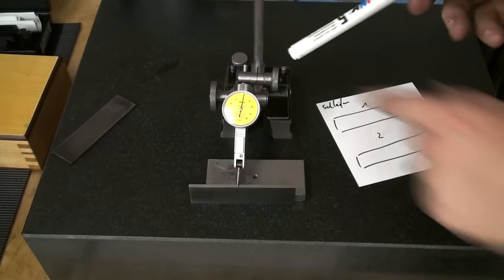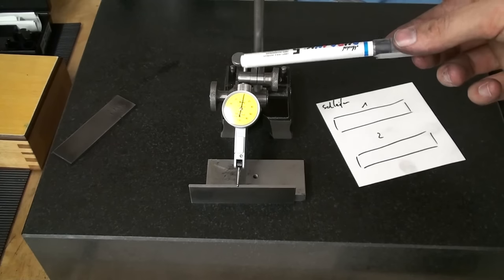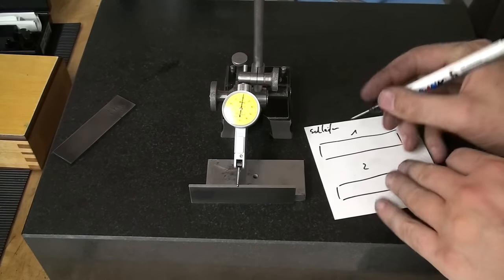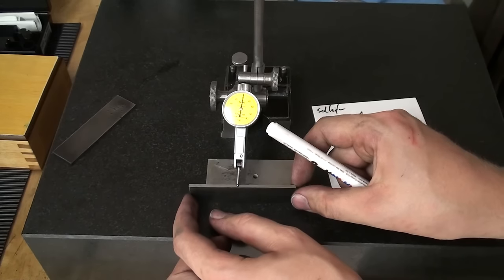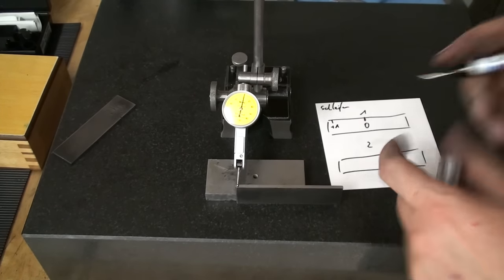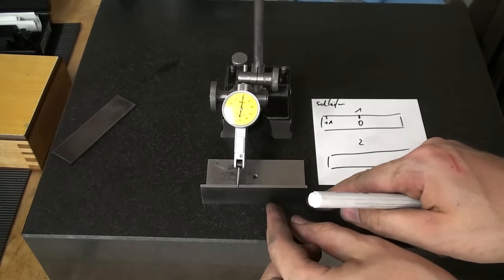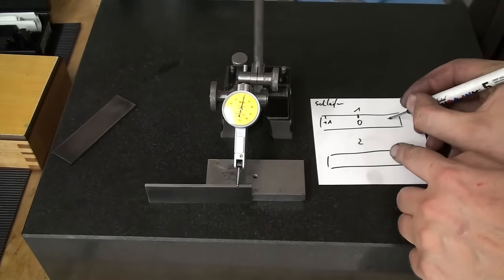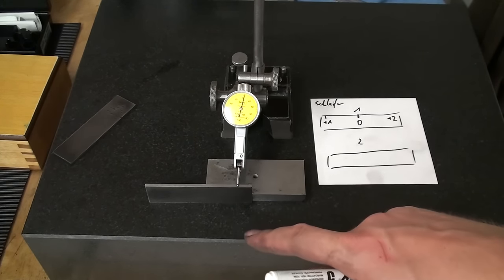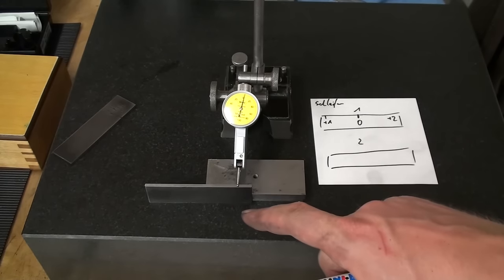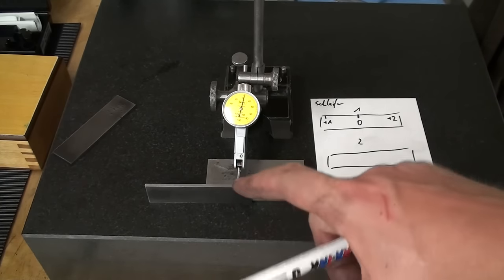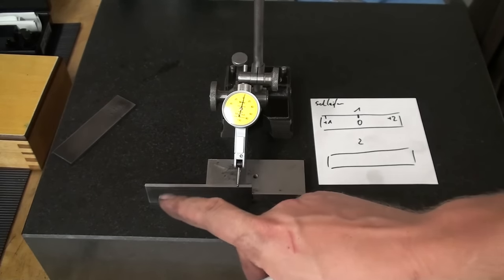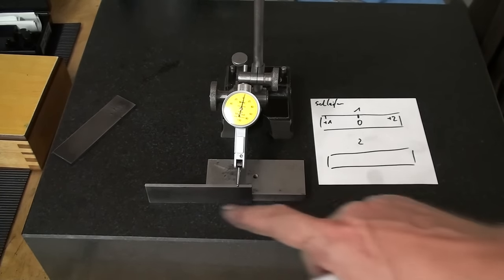Zero our dial. And tap the stem of the height gauge lightly so everything settles down. I have zero in the center. Now we move over. Extreme left. That's plus one. Maybe plus one. Now we go over to the extreme right. And we have plus two. So it makes a slight bow in the center and I even know why this is the case. When I ground the second side I took a quite heavy cut. You might have seen this in the footage of the grinding. And I think what happened is that the part expanded. The grinding wheel took a heavier cut. And now as it settled down and went back to room temperature we have this nice bow in it.